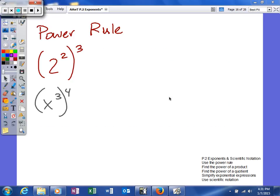The last rule we're going to talk about in chapter P, section 2 is called the power rule. The power rule is basically what to do when you raise an exponent by an exponent.